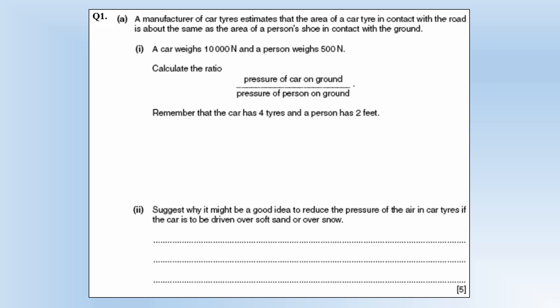So a manufacturer of car tyres estimates the area of a car tyre in contact with the ground is about the same area as a person's shoe. A car has a weight of about 10,000 newtons or a thousand kilograms mass. A person weighs 500 newtons or a 50 kilogram mass.